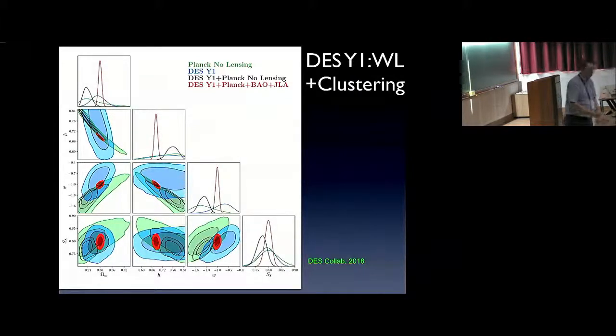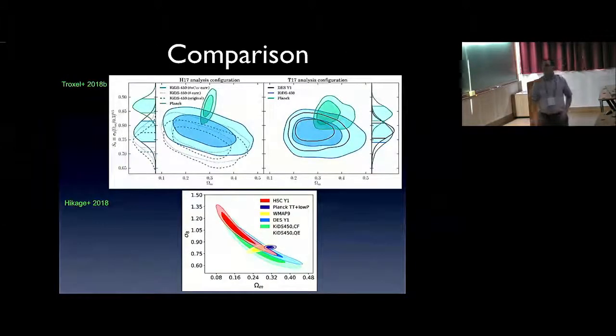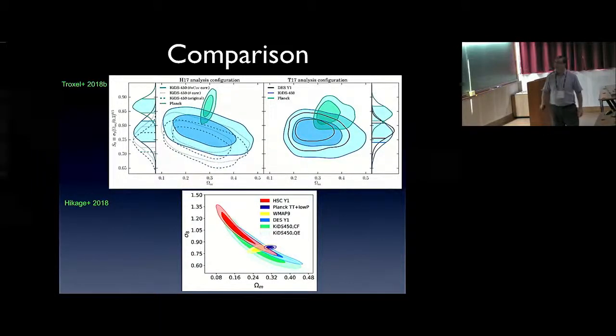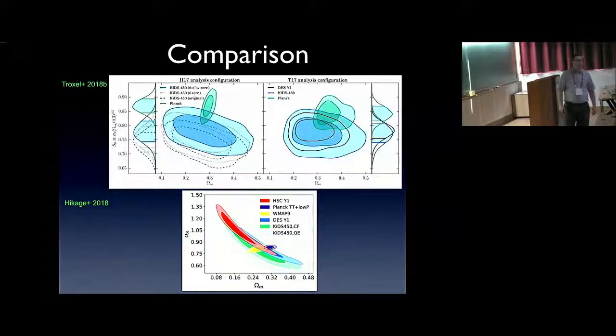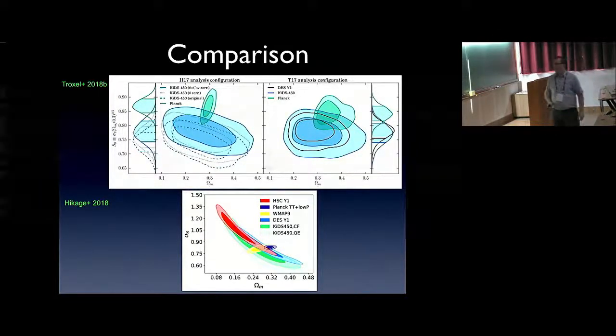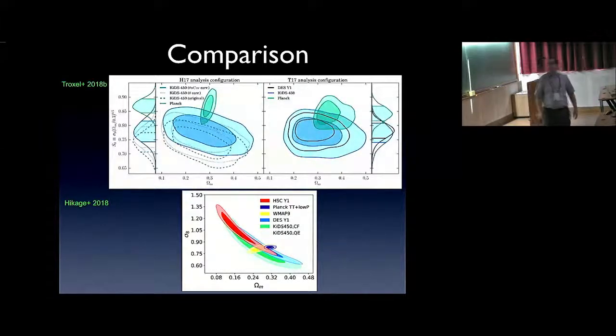So how does now this DES Y1 result compare to other surveys? There are two very good surveys which are also ongoing and to which we can compare. One is the KIDS survey, which for the moment covers 450 square degrees, also in a telescope in Chile. And then there's the Subaru Hyper Suprime-Cam survey, which I think was described by Souroud maybe yesterday, which covers now 130 square degrees so far. Both of them are still ongoing and they're analyzing more and more data.